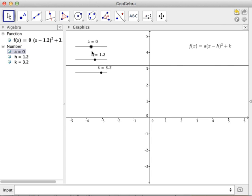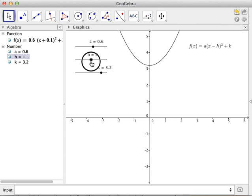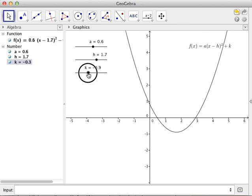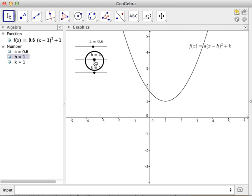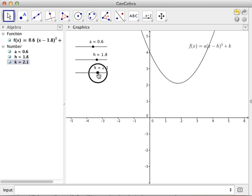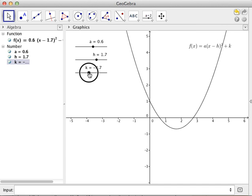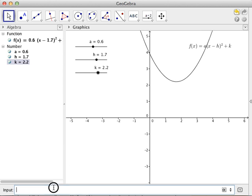They will also discover that h is actually the horizontal translation of the graph, and k is a vertical translation. They will also discover that the ordered pair (h, k) is the vertex of the graph. You can type h and k here and you will know that this is the vertex of the graph.